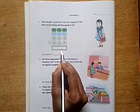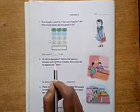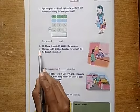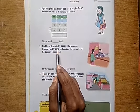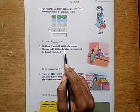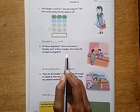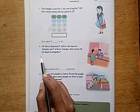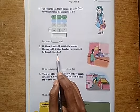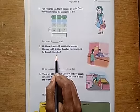Second one: Mr. Major deposited 3450 rupees in the bank on Monday and 4100 rupees on Tuesday. How much did he deposit altogether? So here also we should use addition.